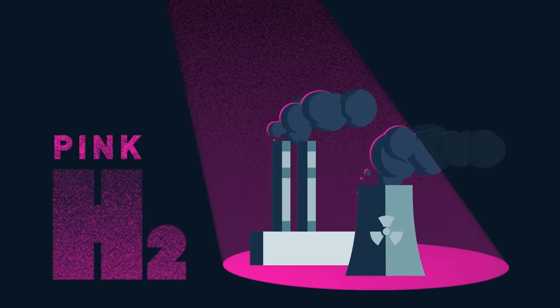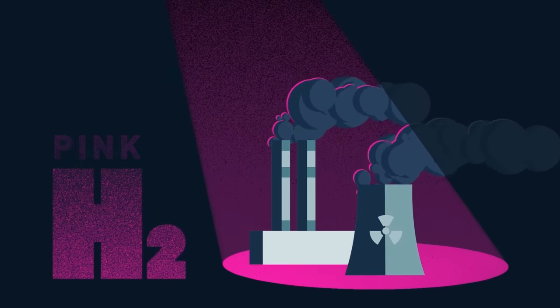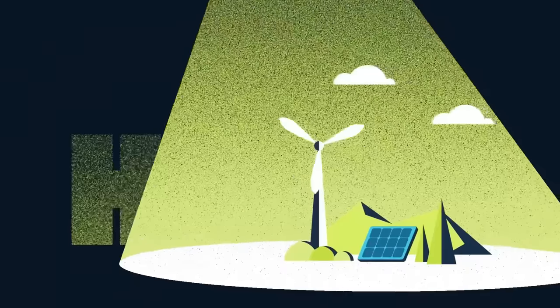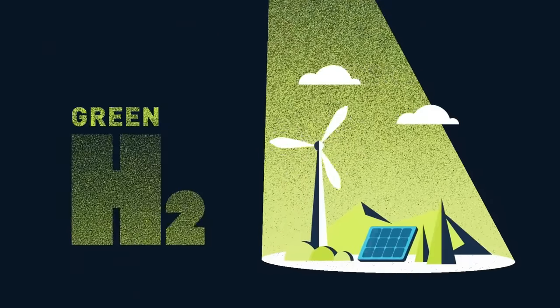Pink hydrogen is made from risky nuclear energy, leaving a legacy of highly toxic waste that needs to be safely stored for thousands of years. Green hydrogen is made from renewable power, mainly wind and sun.